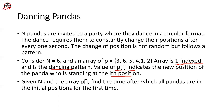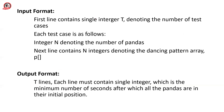Given N and the array P, you have to find the time after which all the pandas are in the initial positions for the first time. The first line of input contains a single integer T denoting the number of test cases. For each test case, you'll be given integer N and array P of length N. The output will be T lines, each denoting the minimum number of seconds after which all pandas return to their initial positions.